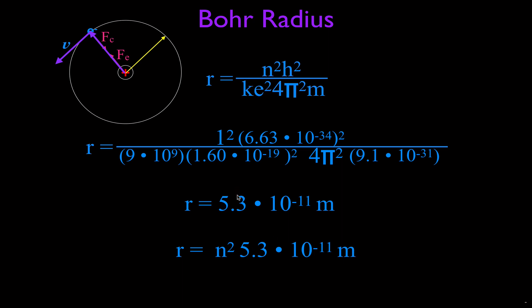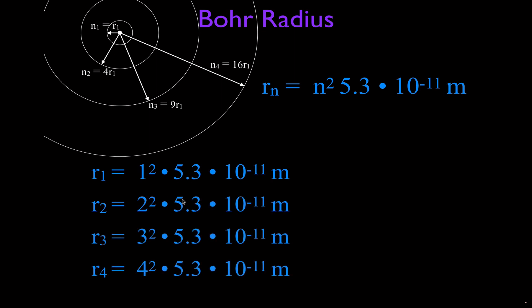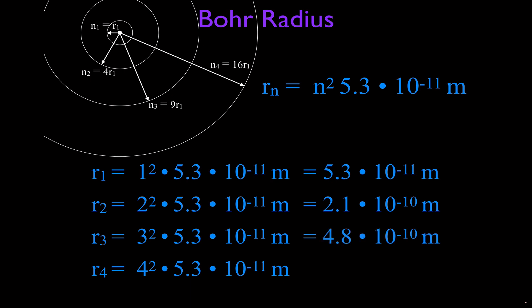For the ground state N1, we get 5.3 times 10 to the minus 11. For the first excited state N2, we square 2 to get 4, and 4 times 5.3 times 10 to the minus 11 equals 2.1 times 10 to the minus 10. We then compute the value for N3 (second excited state) and N4 (third excited state) by squaring 3 and 4 respectively and multiplying by the Bohr radius.